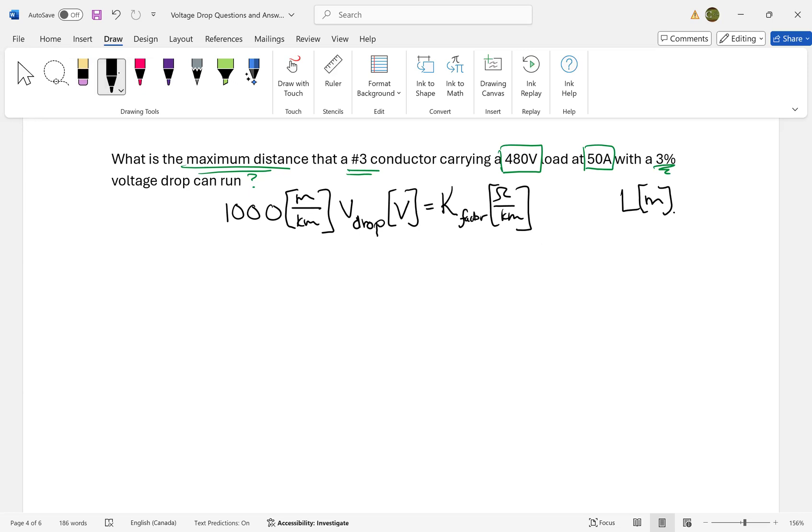To find the maximum distance, we solve for length L. Length is the distance in meters and will be less than or equal to the calculated value. Solving for L means rearranging the equation. The equation isolated for length is: L ≤ (1000 × Vdrop) / (K × F × I).